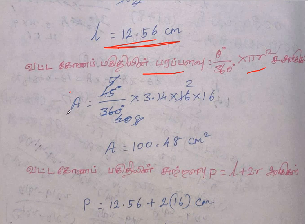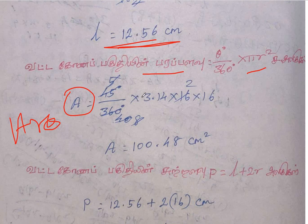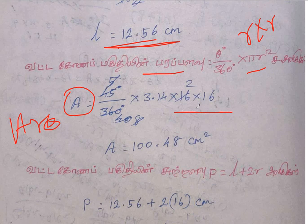A is equal to 45 degree by 360 degree, into pi value 3.14, r squared — which means r into r. So we will get 100.48 cm². If you do not know how to do it, you will know how to do it.